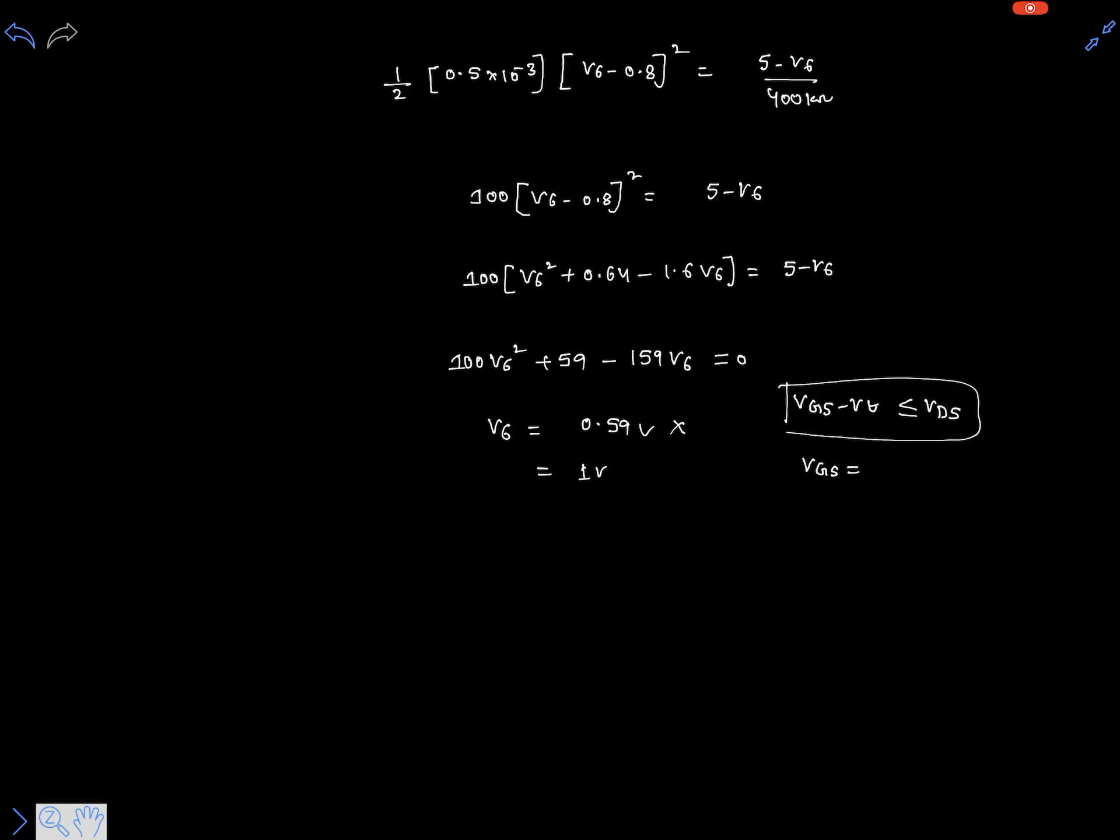So here VGS equals VDS, so VDS, VDG should be greater than at least VT.